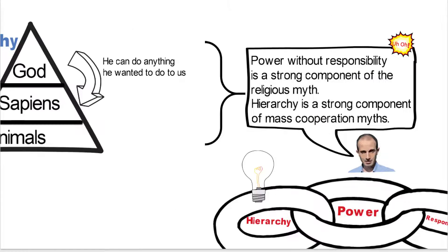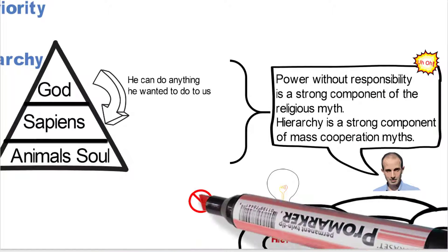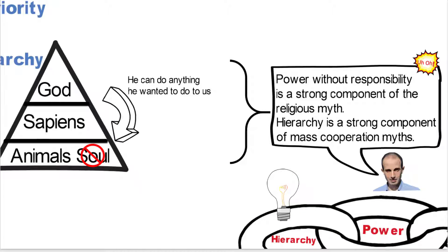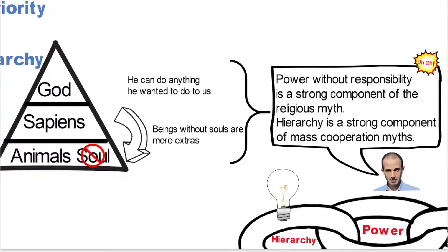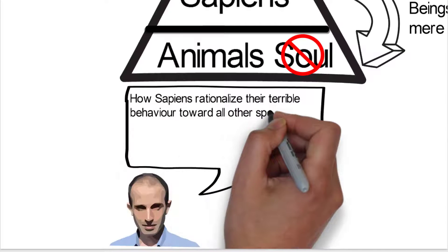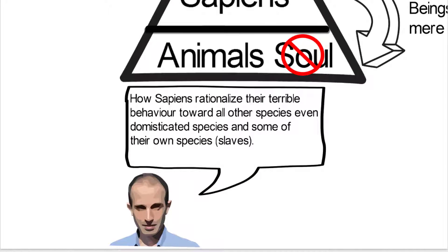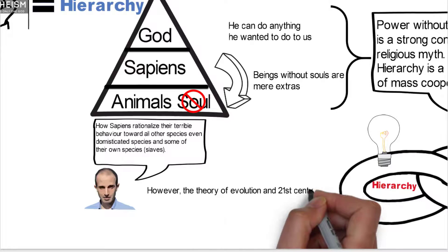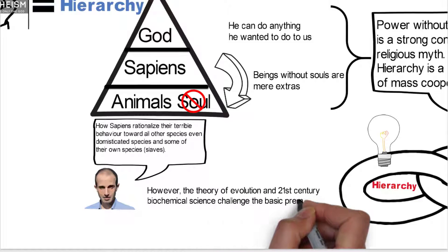And again, this is something that we'll be looking at in a little bit. The other thing is that animals, we didn't give them a soul. So we said animals don't have a soul. And that way, we kind of made them just beings, mere extras in the story. And that's how we rationalize the terrible behavior that we have towards other species, even our domesticated species and some of our own species, like slaves.